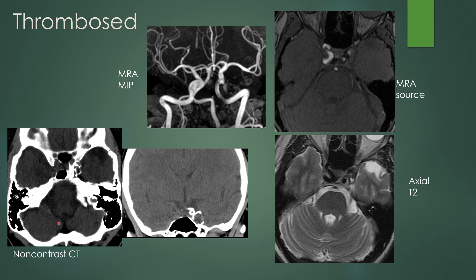A thrombosed aneurysm on non-contrast CT can demonstrate peripheral calcification. Here is a thrombosed ICA aneurysm showing peripheral calcification and central hypodensity on coronal view, with a stent adjacent to it. On MRA you see very little once the aneurysm is thrombosed, though on the source image you can see a little flow within the thrombosed aneurysm adjacent to the wall. On axial T2-weighted imaging there is again heterogeneous signal, mostly low T2 signal.